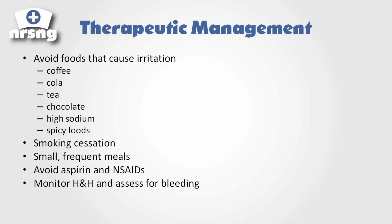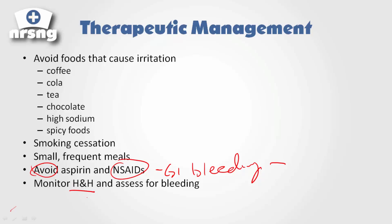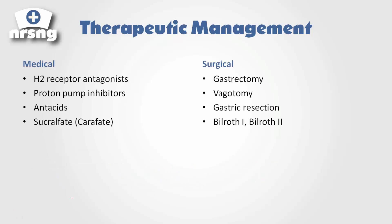We also want to teach patients to avoid aspirin and NSAIDs, because these can cause GI bleeding. With a patient who already has a compromised GI system, we really want to avoid causing further stress. We'll also want to monitor hemoglobin and hematocrit for bleeding, to see if those numbers are going down and if the patient might be bleeding somewhere we can't see.